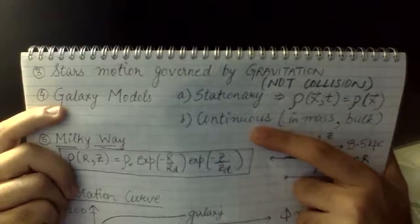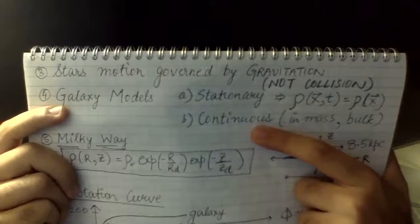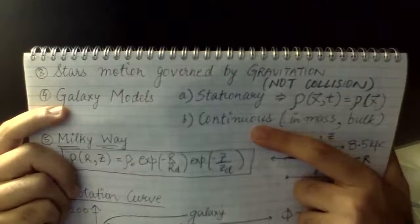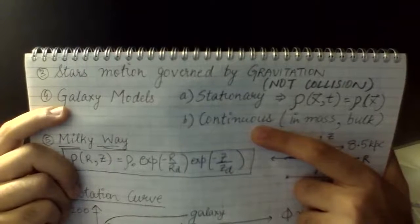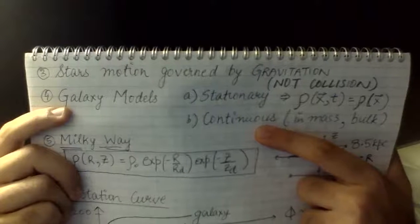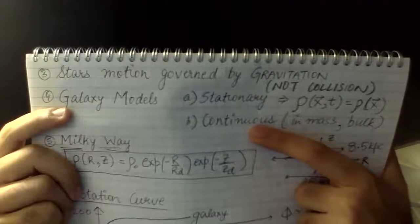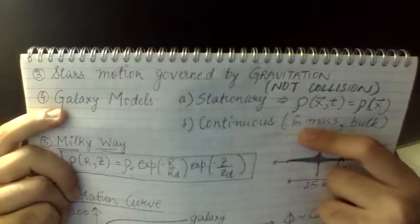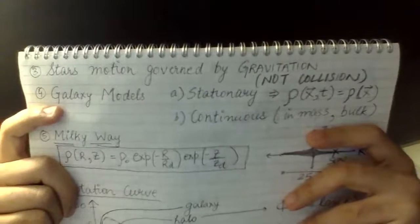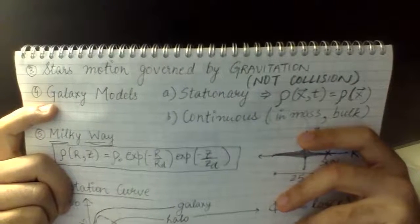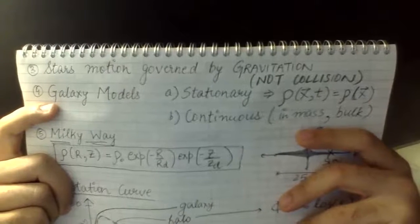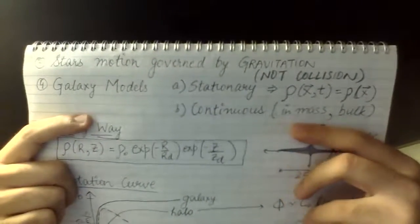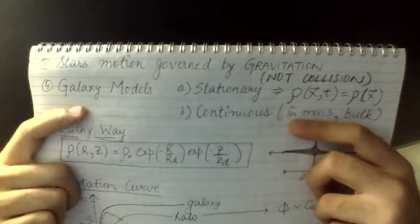Second, though we treat stars as mass points that don't collide, the densities and potentials we discuss will be continuous. It's not physical to calculate the potential at every star by summing contributions from all the rest. Assuming continuous potential and mass distribution actually matches what we observe with telescopes and simulations — so it's a very good assumption. These two characteristics — stationary and continuous — apply to every galaxy model we'll consider.